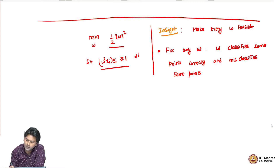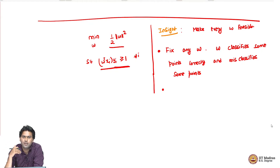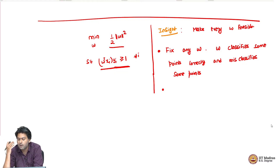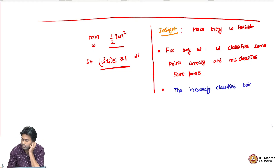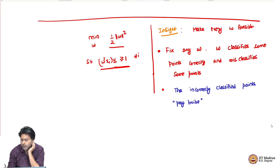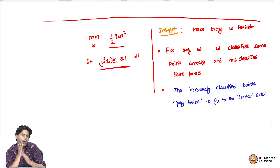Earlier, if a W misclassified any point we would not allow that W, because we want W to classify all points correctly. But such a W may not exist, and that is why the problem comes. So now we take any W and observe that it classifies some points correctly and misclassifies others. For correctly classified points there is no problem. For incorrectly classified points, the idea is loosely speaking: they can pay some bribe to move to the correct side. We are allowing points to pay a bribe to make any W feasible.